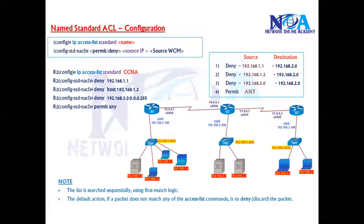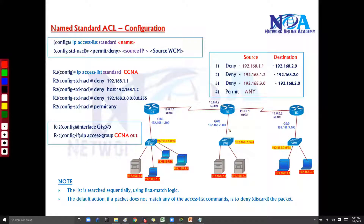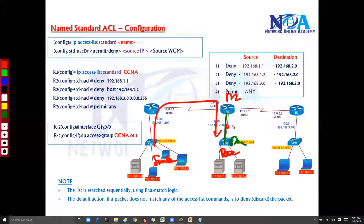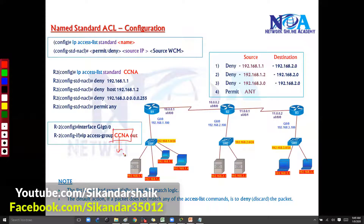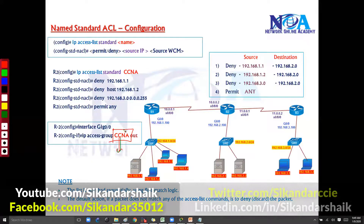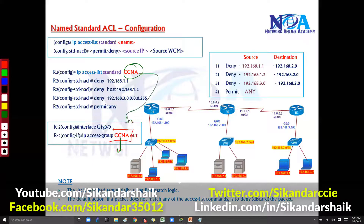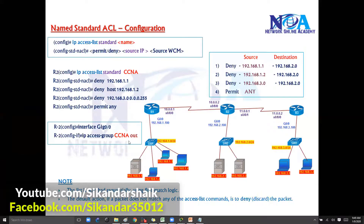The syntax is different but the way you write everything remains the same. Finally, you want to apply this - you can apply either inbound or outbound. Since I'm applying this on Router 2 and this is my destination, it is essentially the outbound direction. So instead of referring to the ACL number, we have to refer to the name of the ACL. I'm using 'CCNA' as a name, but it can be any name - whatever you want you can use.